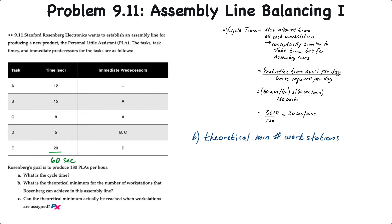Minimum number of workstations, we take the sum of the task times, which we already calculated to be 60 seconds, and we divide that by the cycle time that we just calculated, or 20 seconds per unit. This gives us a nice round exact three workstations.